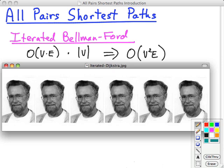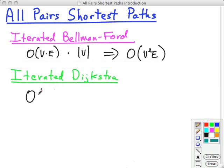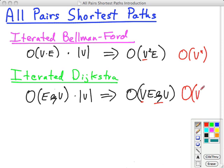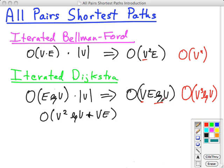Another alternative is to iterate Dijkstra. Dijkstra's algorithm is O(E log V), and if we run that V times for the start vertices, we get O(VE log V). That's better — instead of a V² term we have a V log V term. On dense graphs, iterated Bellman-Ford was potentially O(V⁴), whereas iterated Dijkstra is only O(V³ log V). Also, with Fibonacci heaps, you can speed the whole thing up to O(V² log V + VE), though my numbers here are for the binary min-heap implementation.